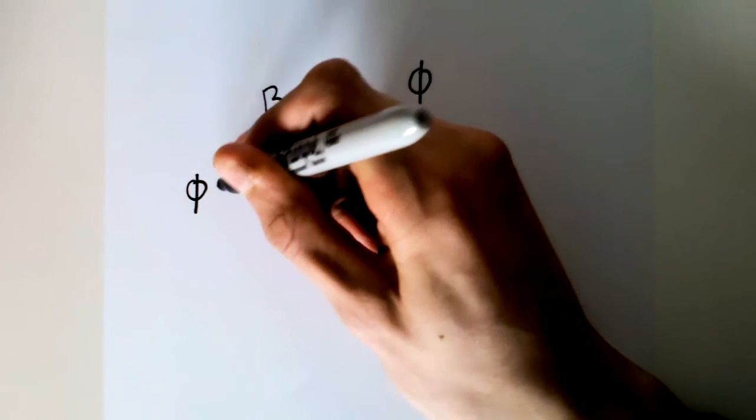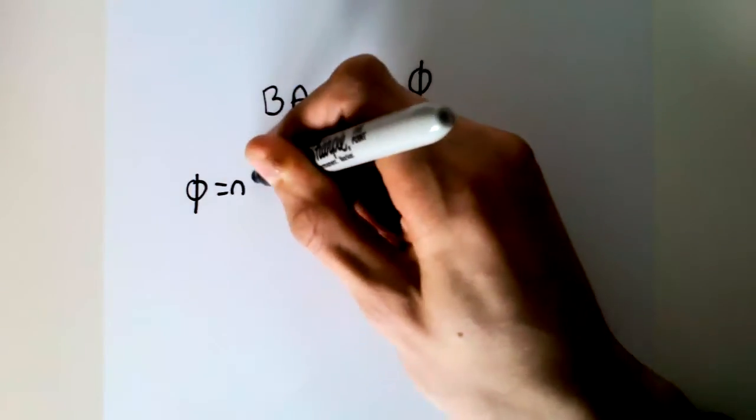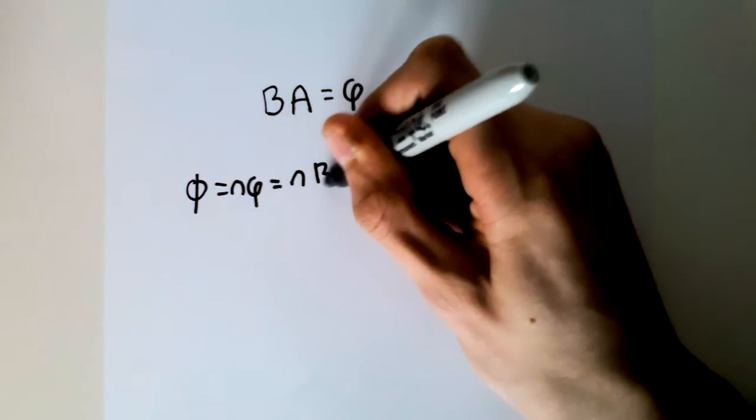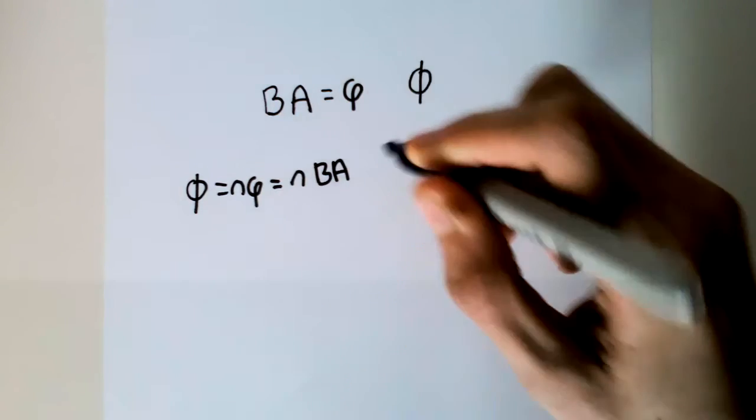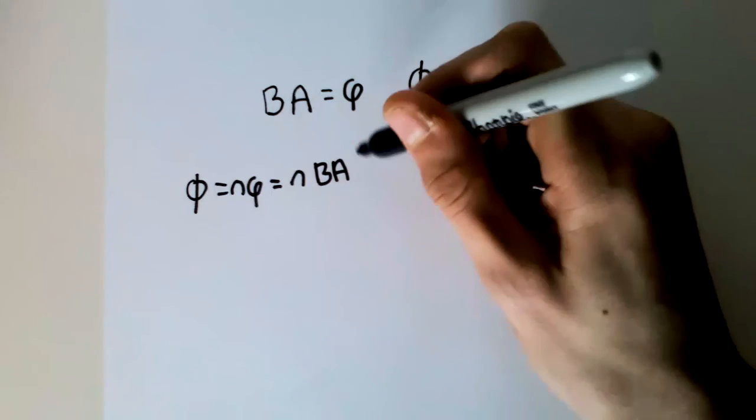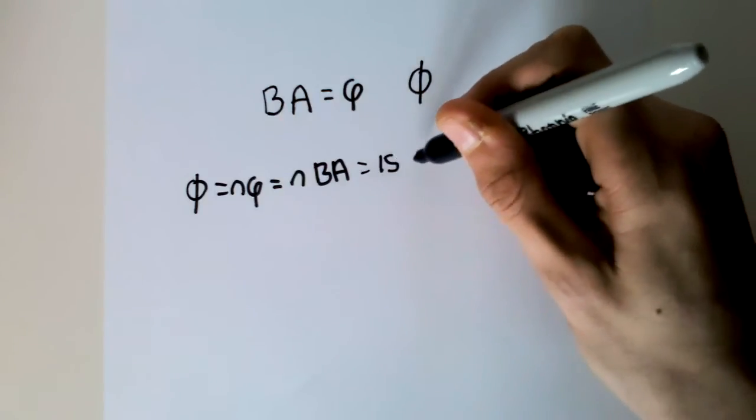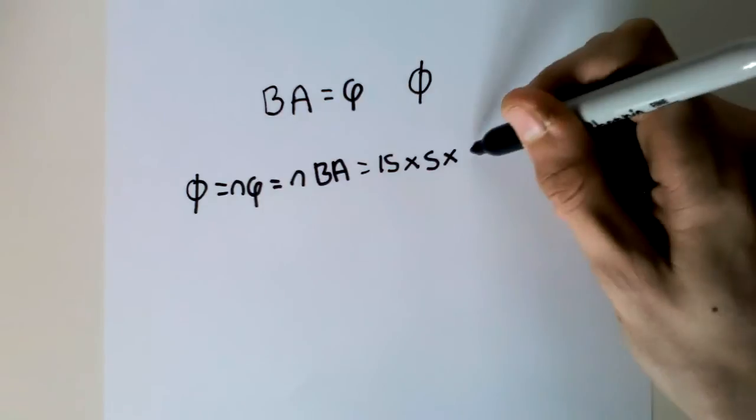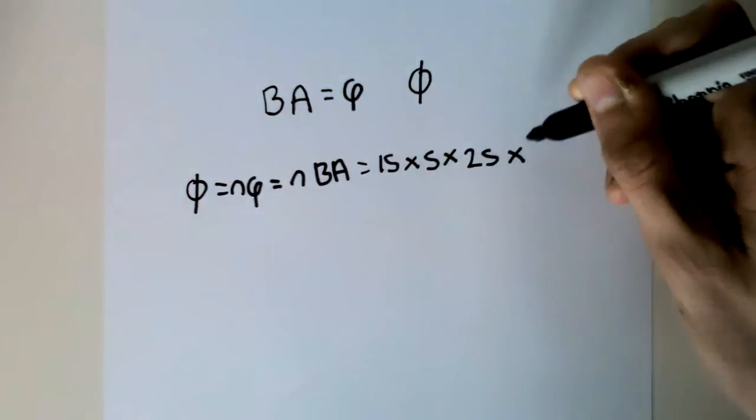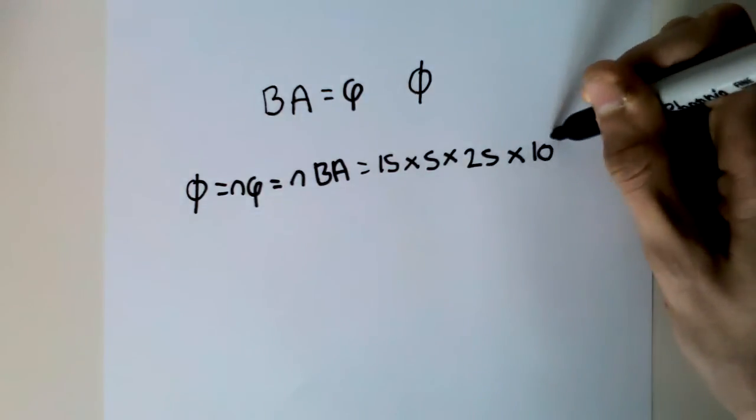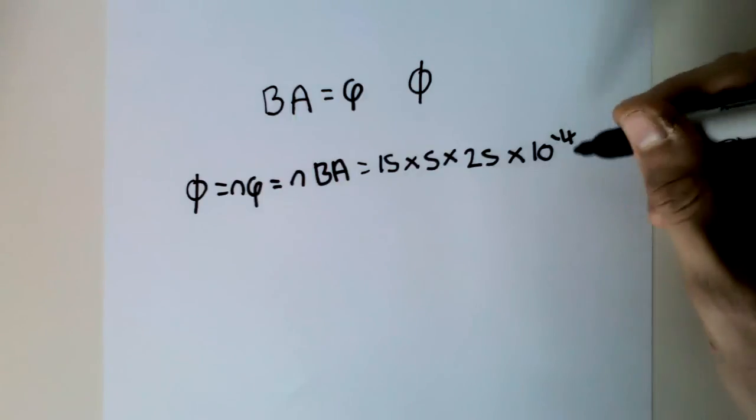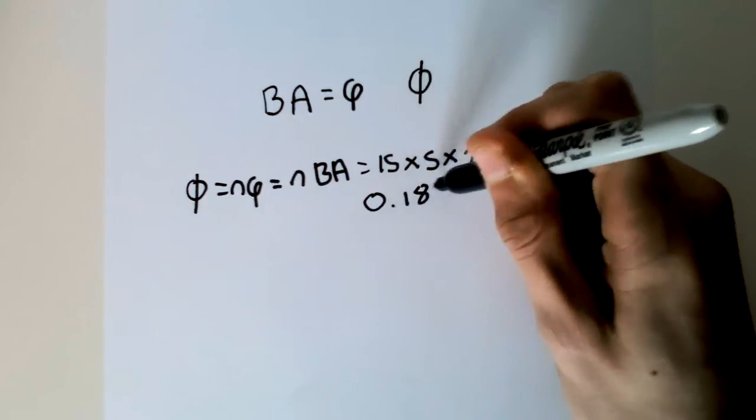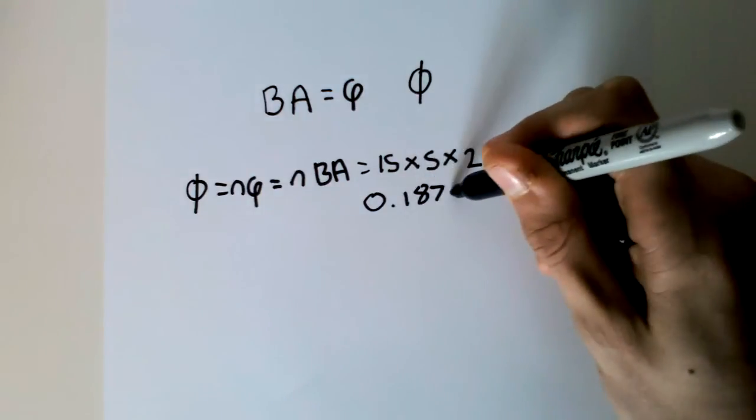So it's equal to N times the magnetic flux, which is also equal to N times BA. And then it's equal to 15 times 5 times 25 times 10 to the minus 4, and that is equal to 0.187 WB.